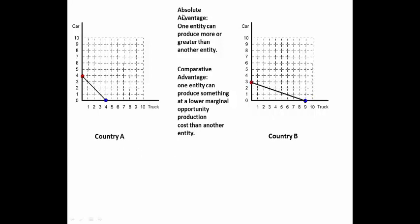We're going to figure out which one has the absolute advantage, where one entity can produce more or greater than another entity. As you can see, Country A can produce 4 cars, Country B can only produce 3 cars, so Country A has the absolute advantage in the production of cars.